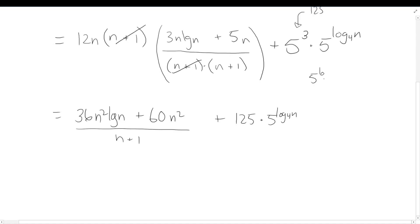Now, what can we do with 5^(log₄n)? If we had 5^(log₅n), that would cancel out and give us just n. But when we change the base we need to be careful. There's a rule I like to remember: you can swap the base and the argument in the exponent, rewriting 5^(log₄n) as n^(log₄5). Let me show how to derive this if you need a reminder.